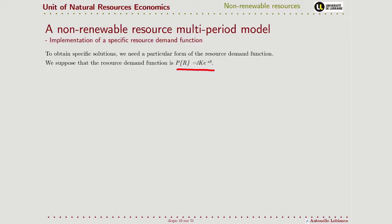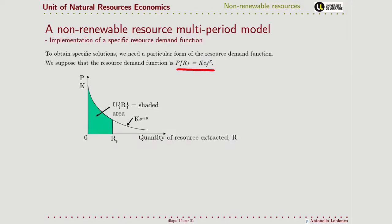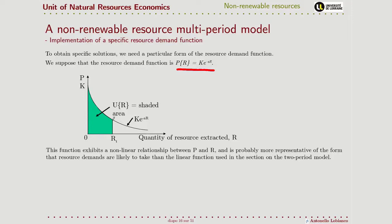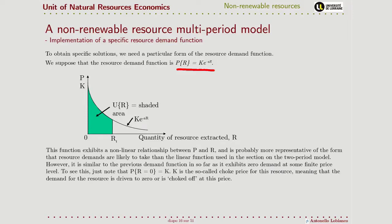This is the chart. The benefits, the utility, is again the integral over the demand function. Compared to what we did in the two-period models, we are considering a nonlinear relationship that is perhaps more suitable for the real world, but we are still using one price at which the resource demand is equal to zero. If we replace the quantity with zero, the price is equal to k. So k is what we call the choke price, because the demanded quantity goes to zero.